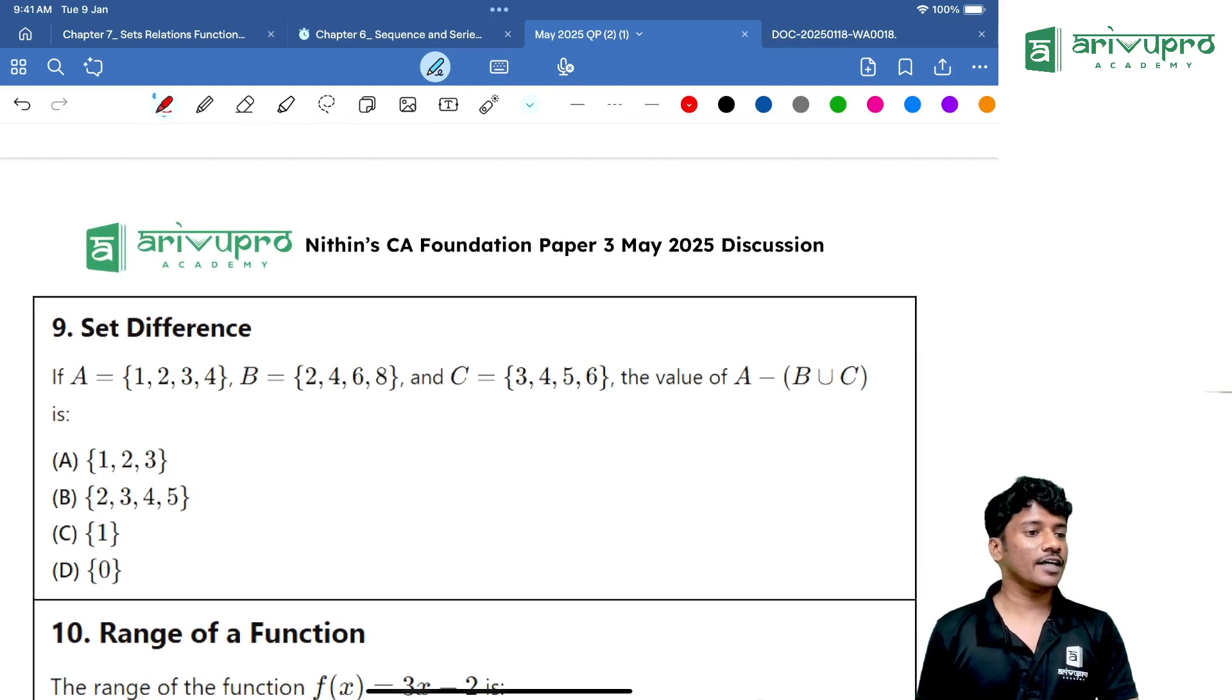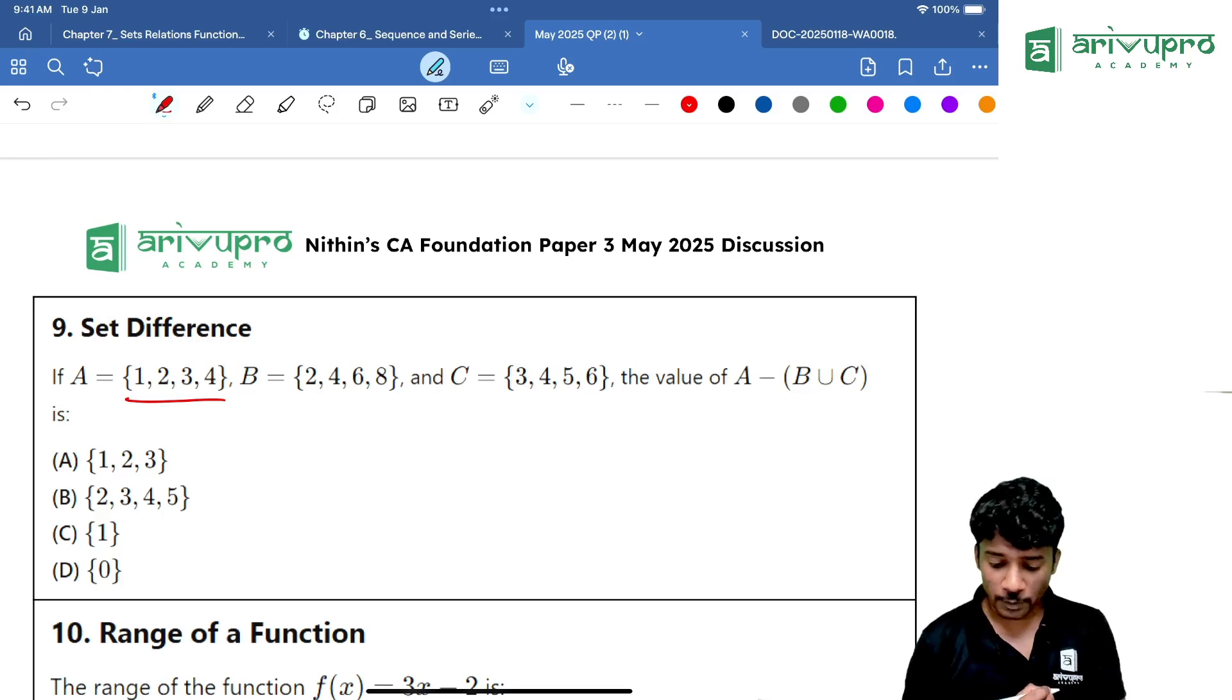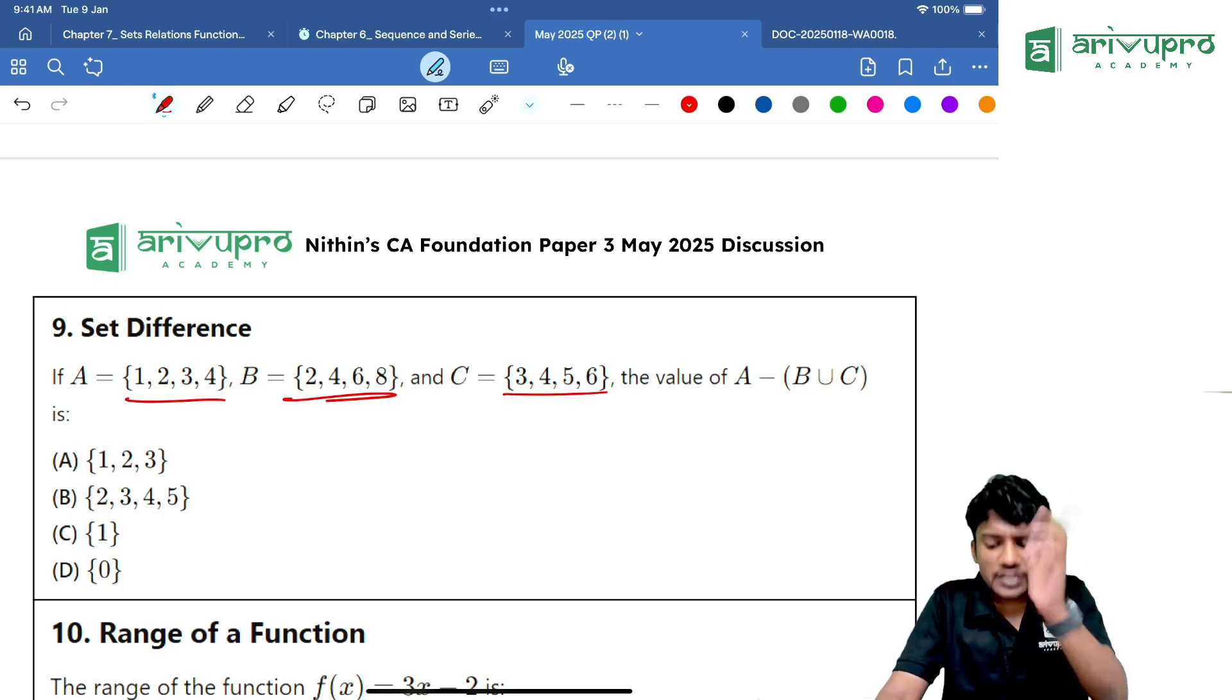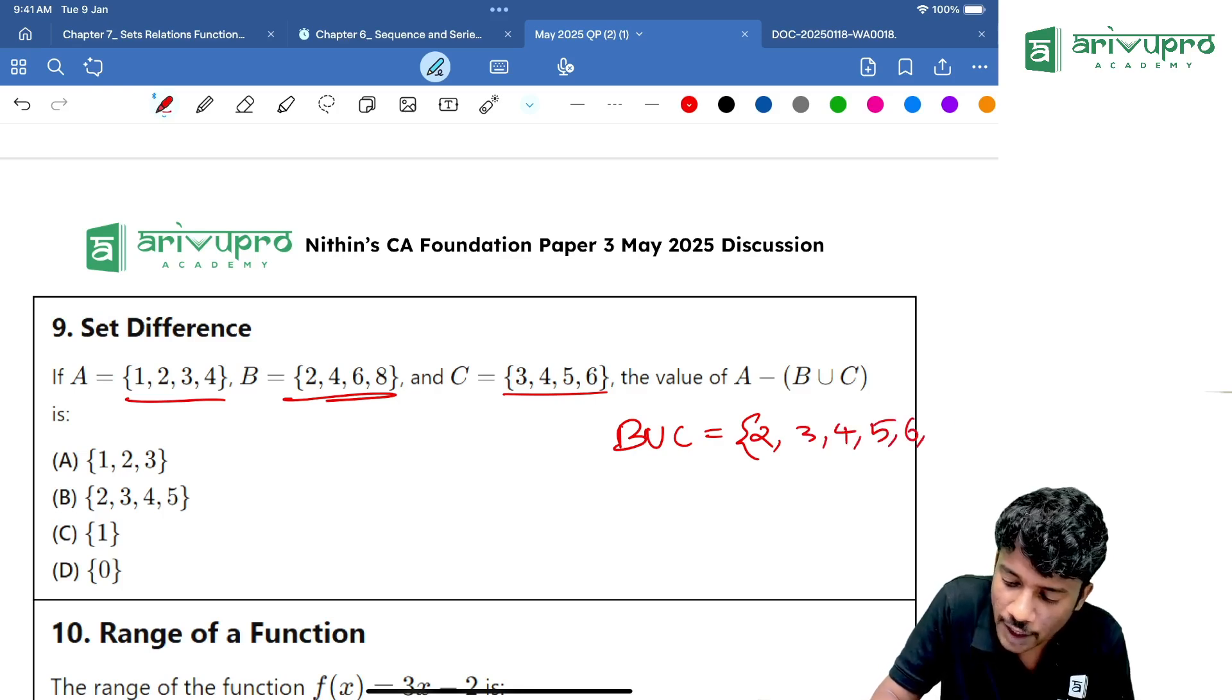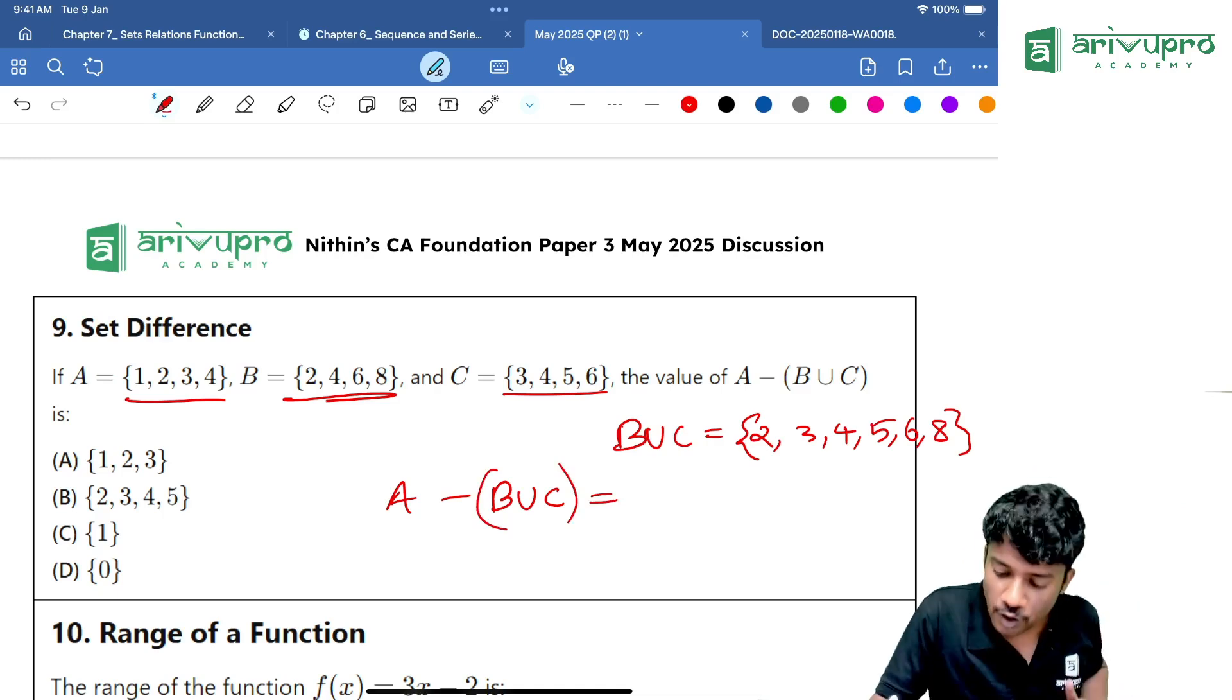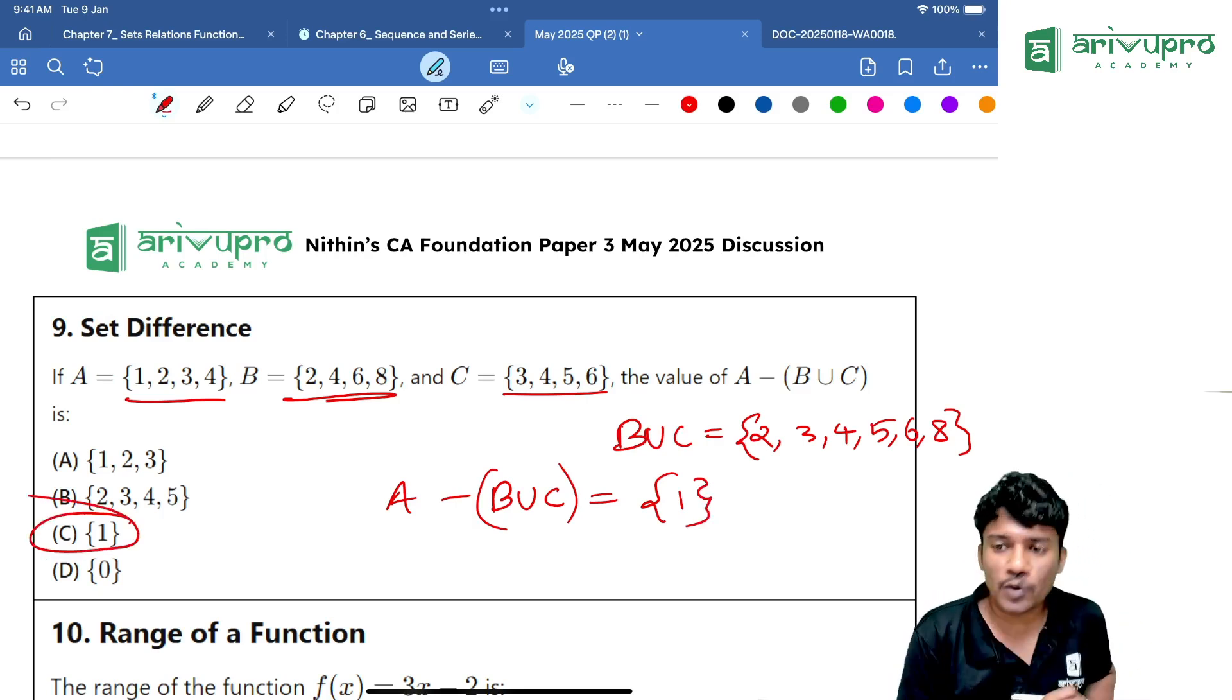Get me the answer. Another easy question. Set A is given 1, 2, 3, 4. Set B is given 2, 4, 6, 8. C is given 3, 4, 5, 6. Then A minus B union C. So, B union C is 2, 3, 4, 5, 6, 8. Now, the question is A minus B union C. What is the meaning of that? Whichever is present only in A. What values are only present in A? Only 1 is present only in A. Answer is option C. Clear?